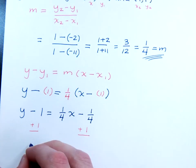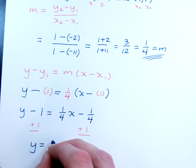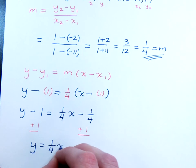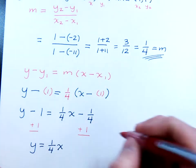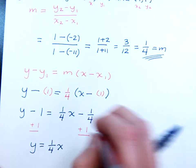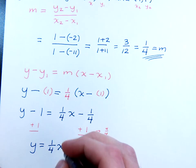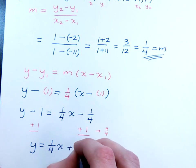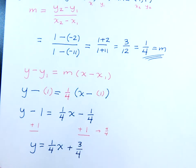And now you're going to have y equals 1 fourth x. Remember that what you have here can be 4 over 4. So minus 1 fourth and a positive 4 over 4 is going to be a positive 3 fourths.